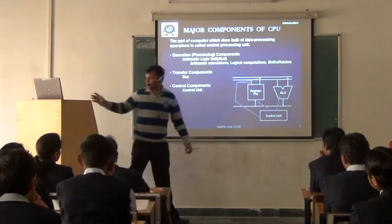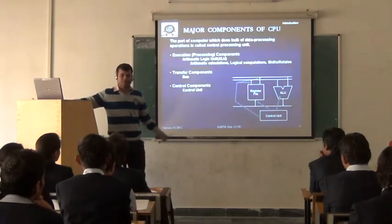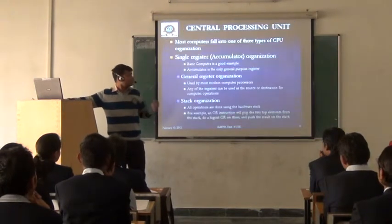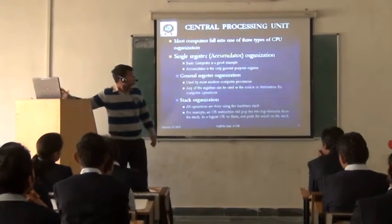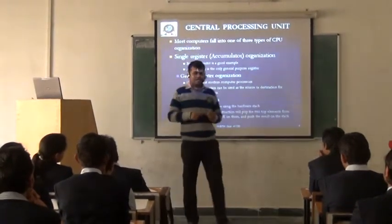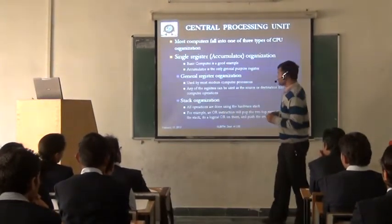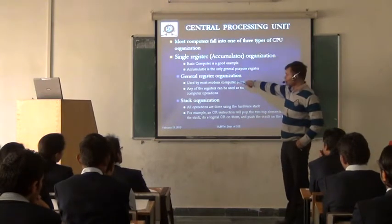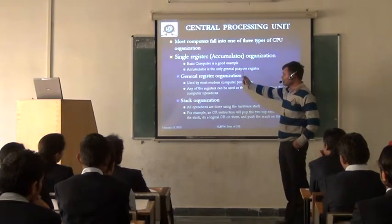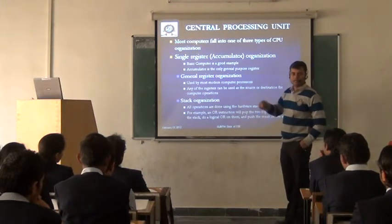The control unit is basically a supervision unit. Most of computer organization falls into three categories: first, single register — that is accumulator organization; second, general register organization; and third, stack organization. In the coming slides we will see how these function.